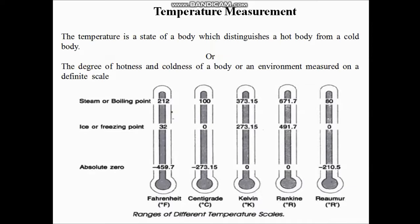Temperature is defined as a state of a body which distinguishes a hot body from a cold body, or the degree of hotness and coldness of a body or an environment measured on a definite calibrated scale. There are different types of scales used to measure temperature. In general we use degree centigrade or degree Kelvin. Similarly, we also have degree Rankine, degree Réaumur, and degree Fahrenheit.